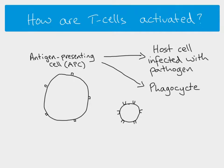The second possibility is that the antigen presenting cell is actually a phagocyte. If it is a phagocyte, bacterial cells will have gone inside it - not because it's been infected, but because the phagocyte has engulfed them and destroyed them. During the process where the pathogen is digested by enzymes inside the phagocyte, rather than being completely digested, fragments of the antigens remain intact and are presented on the outside.